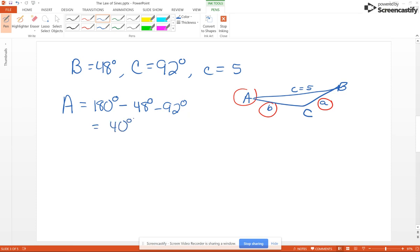Now we need to find side A and side B. There's no particular order for this procedure, so I just use alphabetical order. So I'm going to find side A first. So I'm going to have A over sine of A because that's what I'm looking for is side A and I have the information for the C's. So we're going to do C over sine of C.